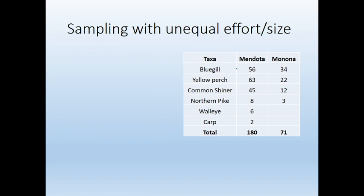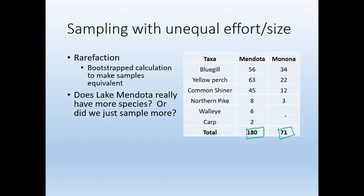There's another way to deal with unequal effort and size, called rarefaction. Take an example of two lakes — Lake Mendota and Lake Monona in Madison. We've got way more individuals, way more fish, caught in Lake Mendota versus Lake Monona. The question is: does Lake Mendota really have more species, or did we just sample more? The way we can figure this out is with rarefaction.